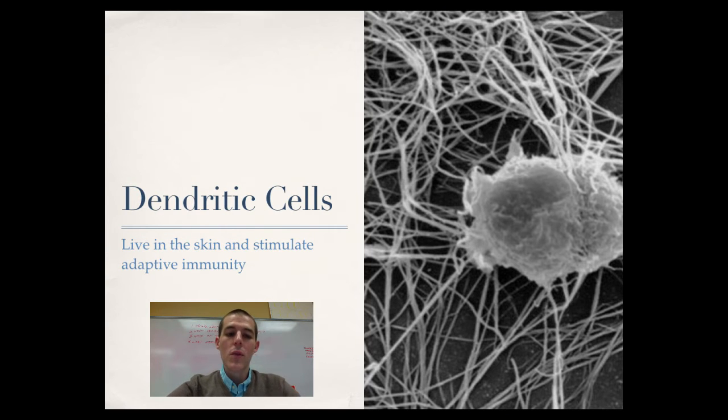We've got dendritic cells, which live in the skin and they stimulate adaptive immunity. So in our later videos where we talk about the immune system that can recognize the invader, these guys stimulate that system. They also work to engulf other cells in a phagocytic manner.